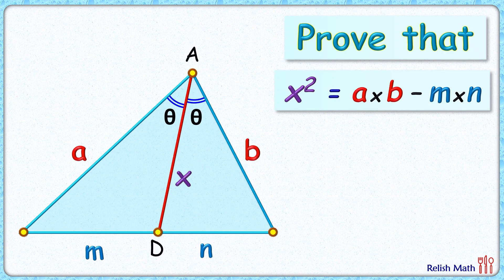It's a really interesting question. Can you prove that in a triangle, the square of the length of the angle bisector is given by a times b minus m times n, where a and b are the side lengths containing the given angle?